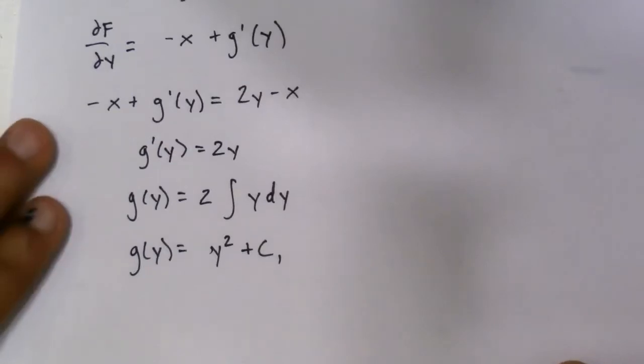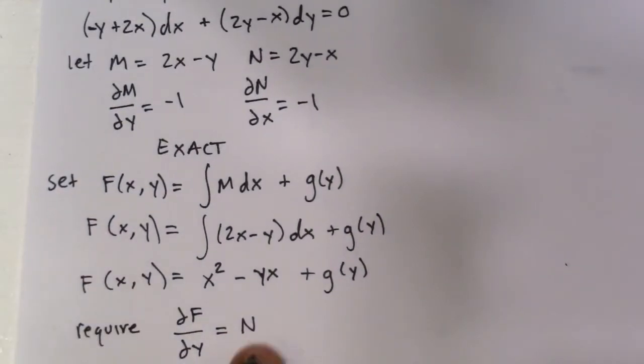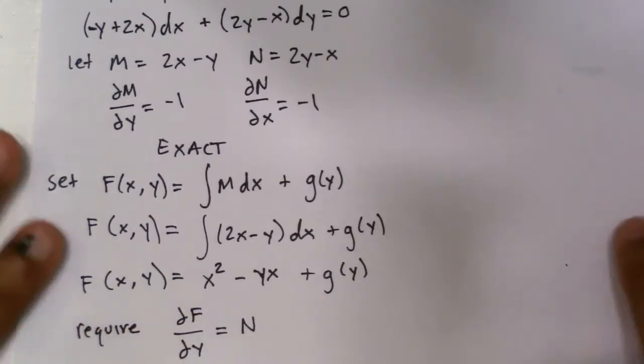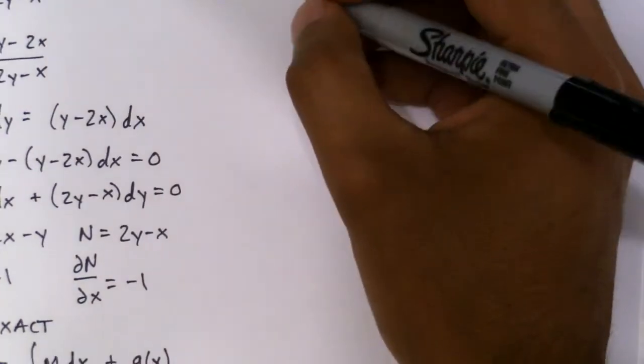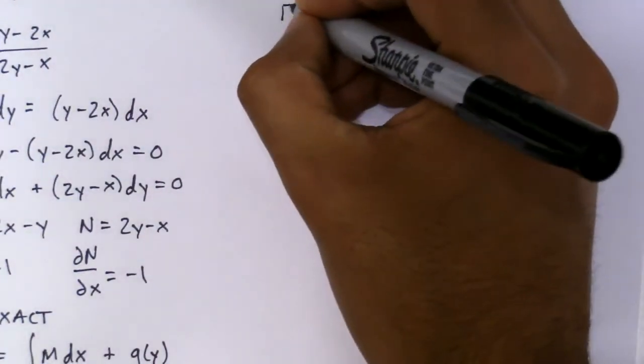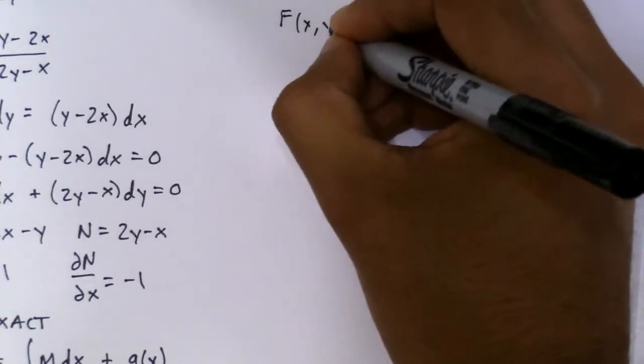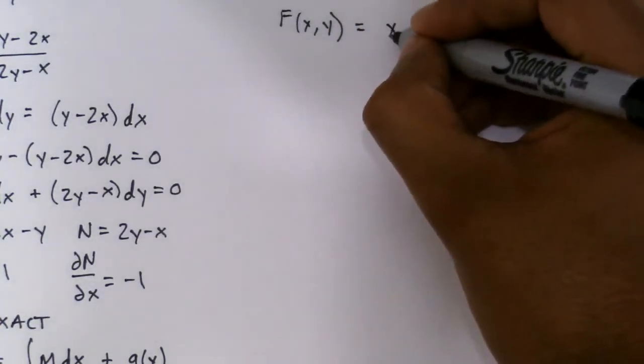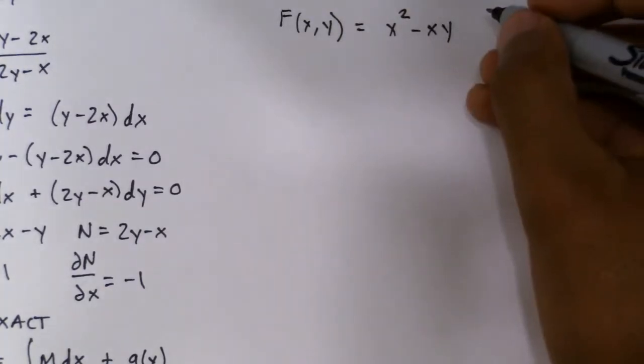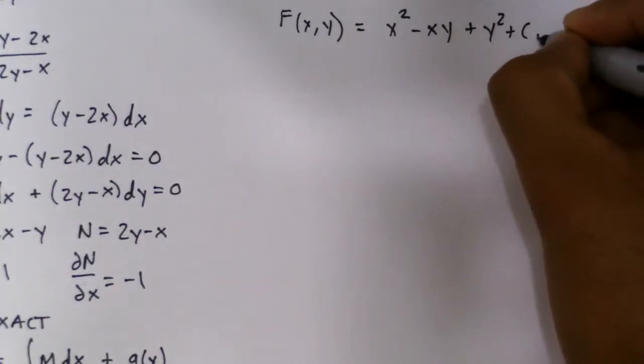Alright, now that we have that, we can plug g of y into this right here. So I'm going to do that up here. Okay, so F of x, y equals x squared minus xy plus g of y, which is y squared plus c1.